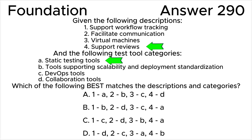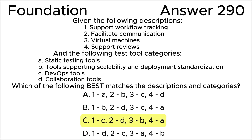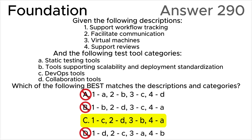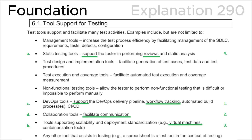Statement four — support reviews — corresponds to static testing tools (a). Static testing tools support the tester in performing reviews and static analysis. In summary, the correct answer is C: one=c, two=d, three=b, four=a. Finally, let's look at section 6.1 — Tool Support for Testing — in the ISTQB syllabus, which confirms that static testing tools support the tester in performing reviews and static analysis.